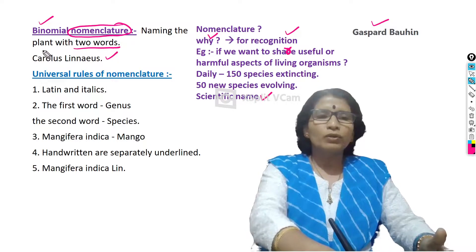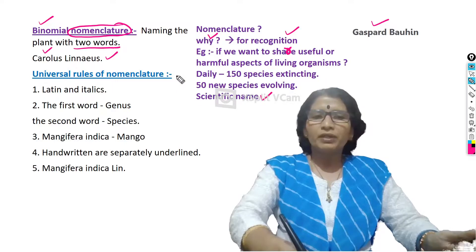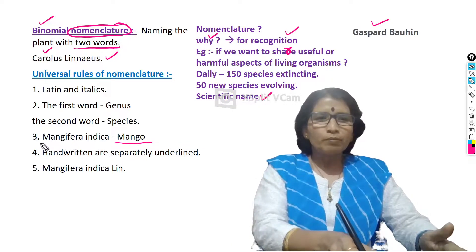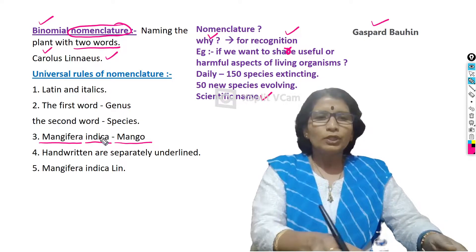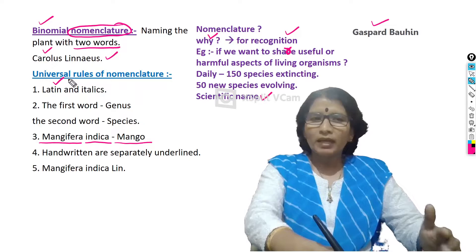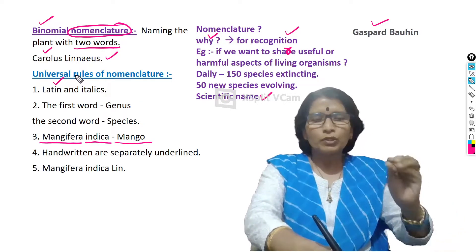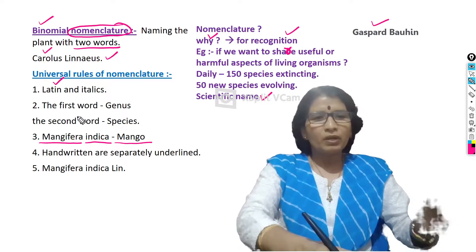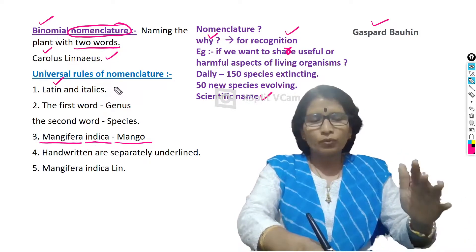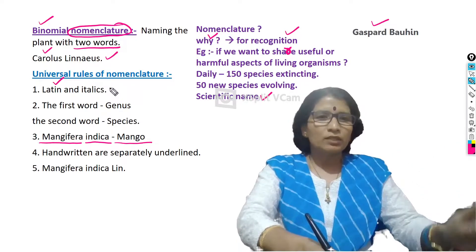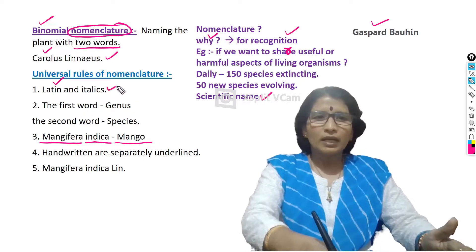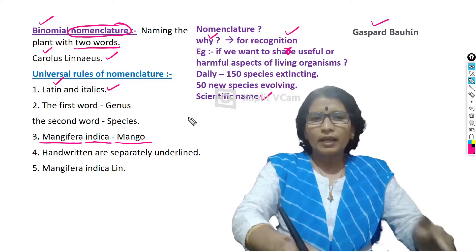Total credit goes to Carolus Linnaeus. By following universal rules of nomenclature only, we can give any particular name to any living organism. For example, the mango plant's scientific name is Mangifera indica. In this name, there are two words: Mangifera and indica. These two words are taken from Latin language. Why especially Latin? Because this is an ancient language and it is not used by any country as an official language. If any official language were used, it would create controversy — for example, if Indian language were used, other countries would object, asking why only that language is used. To avoid that controversy, Linnaeus used an ancient, non-official language. When writing a scientific name, use italics — a stylish, somewhat slanted handwriting.